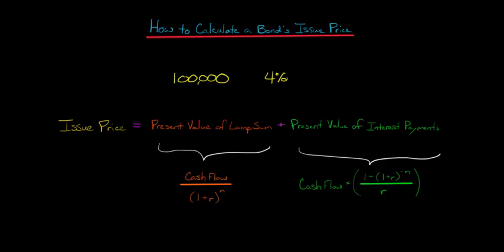And so we can take the present value of each of these things. We can take the present value of the $100,000 that you're going to receive five years, 10 years, 15 years from now, and then we can also take the present value of that stream of interest payments that you're going to be receiving.